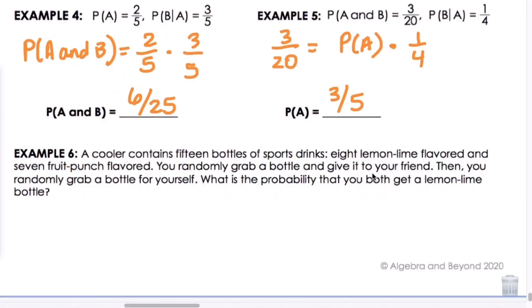And let's look at actual scenario. In example 6, a cooler contains 15 bottles of sport drinks. We have 8 lemon-lime flavored and 7 fruit punch flavored. You randomly grab a bottle and give it to your friend. Then you randomly grab a bottle for yourself. We did not replace the bottle, obviously. If you're giving it to your friend, they're going to drink it. So what is the probability that you both get a lemon-lime bottle? So probability of A and B happening. We know that we want the lemon-lime and there are a total of 15 bottles and 8 are lemon-lime. And we also want our friend to have that. Well now we only have 14 bottles left and only 7 lemon-lime. So we'll multiply that. And we end up getting 4 over 15, which is approximately 27.7% chance of that happening.